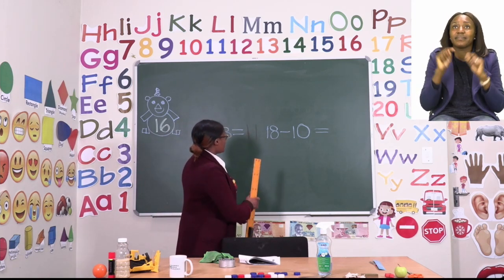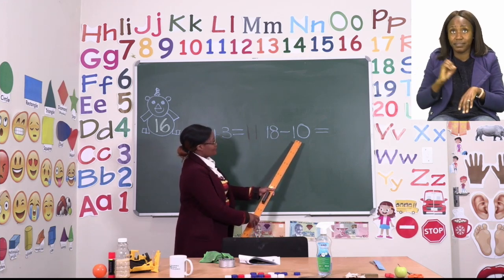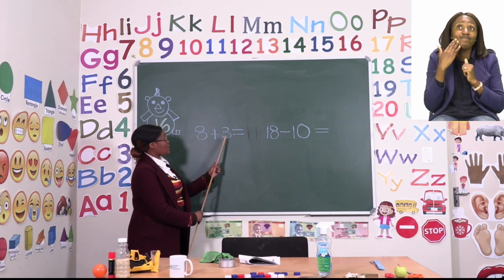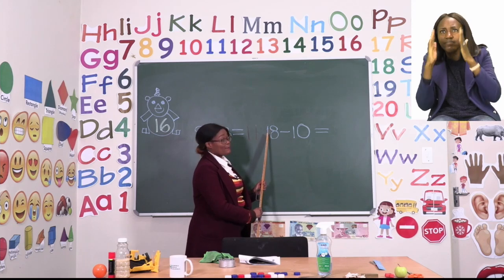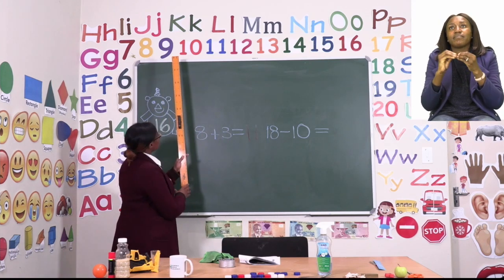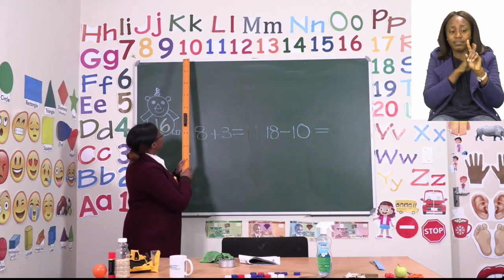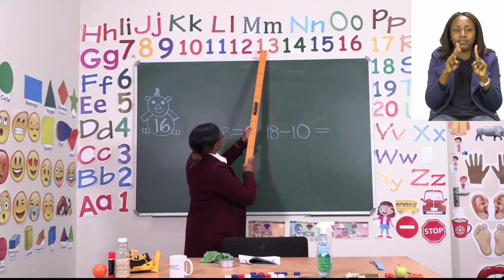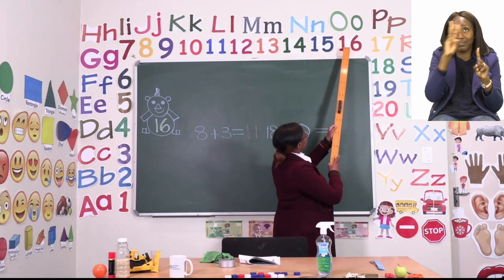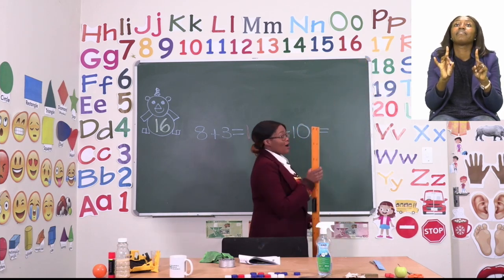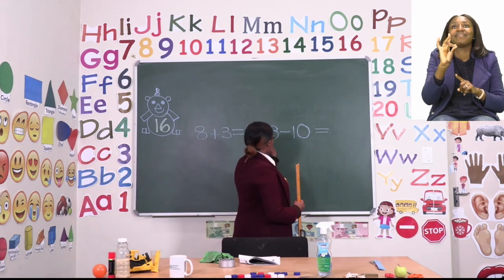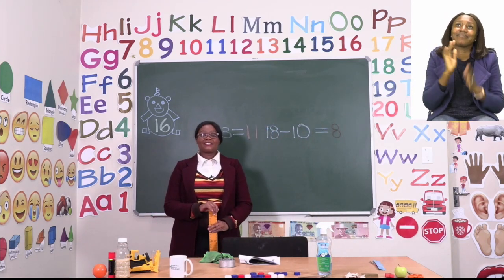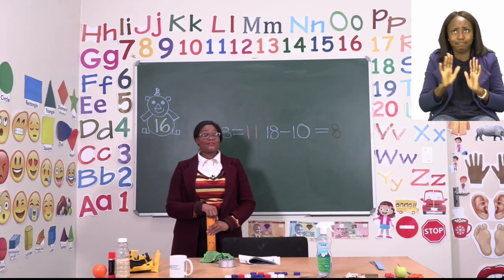Let's now do the next one: 18 minus 10. Now we start with the smaller number. When we are subtracting, we start with the smaller number and count up to the bigger one. Let's go to 10 — I want you to put your finger on 10 and now we're going to count going to 18. Let's go: 1, 2, 3, 4, 5, 6, 7, 8. Our answer is 8. So 18 minus 10 will give us 8.